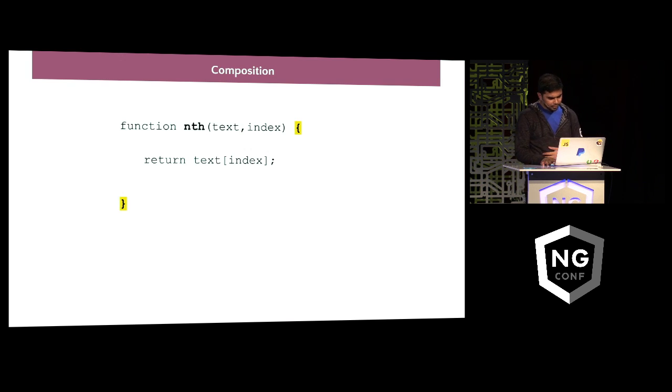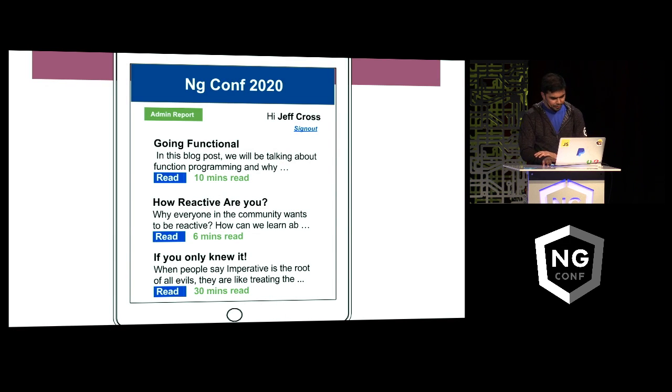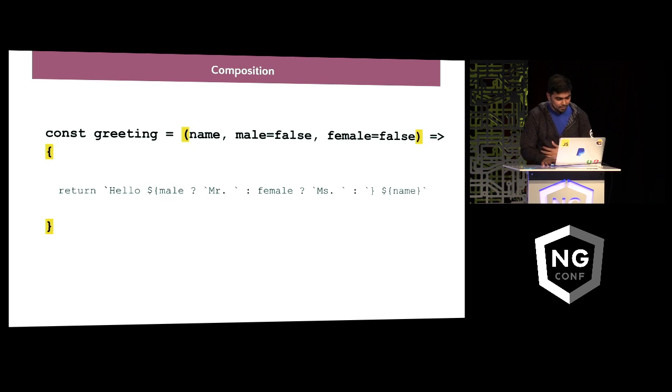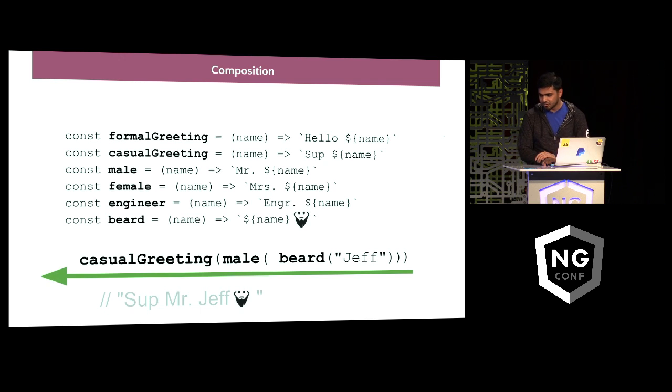Let's talk about composition. So most of us have done these basic composition like creating an nth function and then compose specific functions like a second function out of an nth function. Now let's go back to our interface. Do you remember the greetings and user name we display? How do we do that? So here's the basic function we started from. But we wanted to append Mr. or Mrs. based on gender, so we changed our function a little and make it look like this. But then we wanted to add more stuff to this function and we cannot just keep on adding stuff to our function. So we create separate composable functions for each part of our greetings. And how do we compose a message for Jeff? So we pass Jeff to beard, and then we pass the result to mail, and then we pass the result to casual greetings, which actually generates, what's up, Jeff?